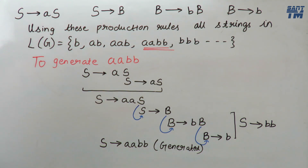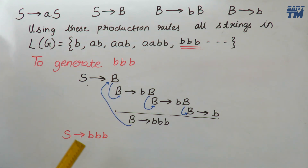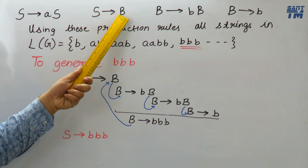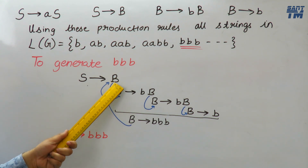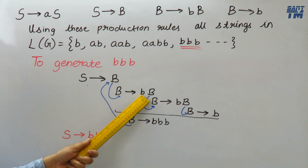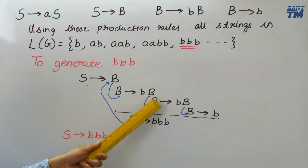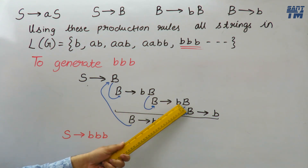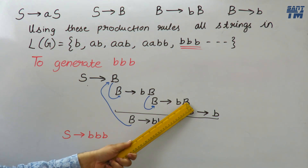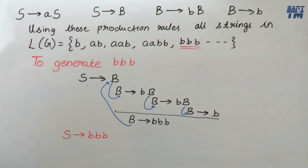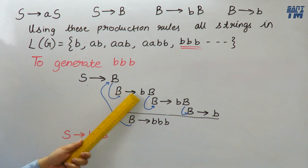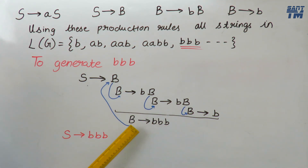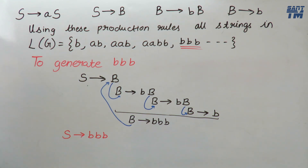Now we will see the fifth one: triple b. To generate bbb, we use the production S derives B. This non-terminal B is replaced using B derives bB, and again this non-terminal B is replaced using the same production to produce bB. This B is then replaced using the terminal b. So using these steps we get S derives bbb — all five strings satisfy the production rules we generated using the hit and trial method.